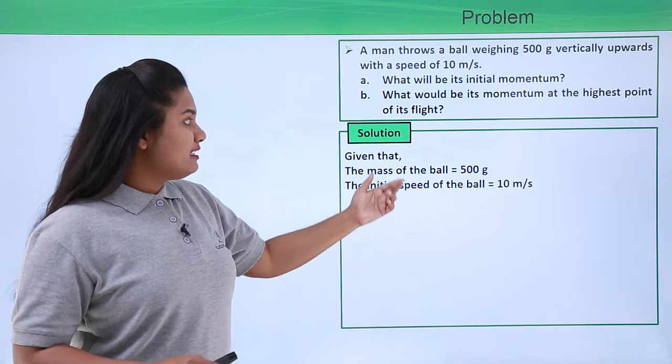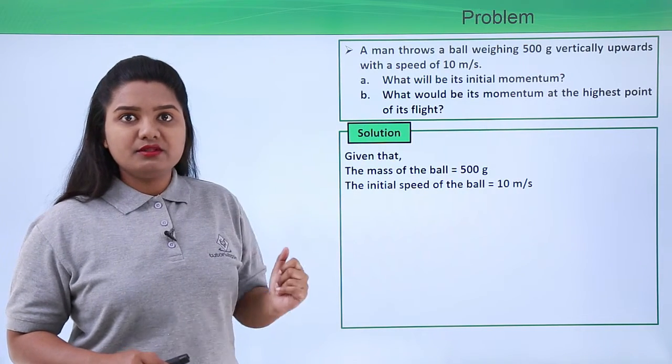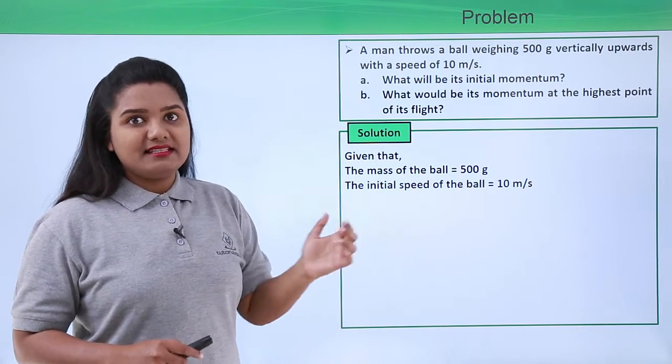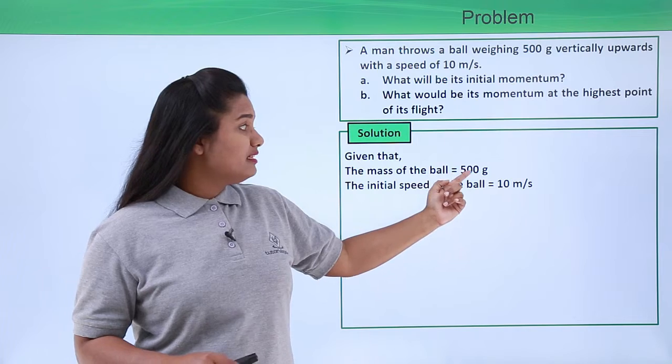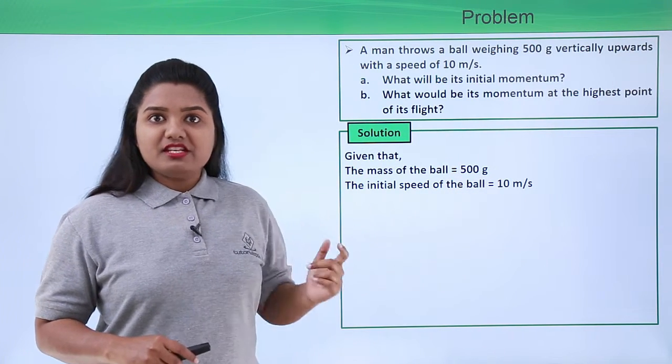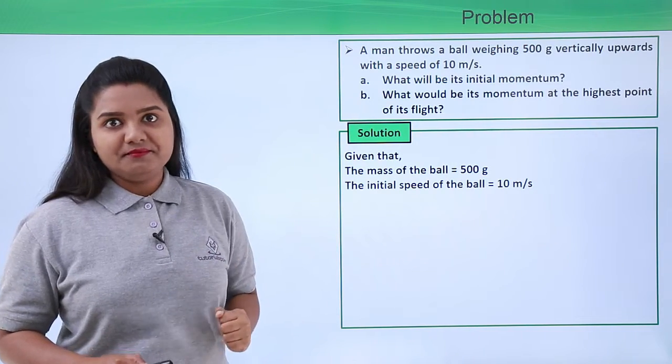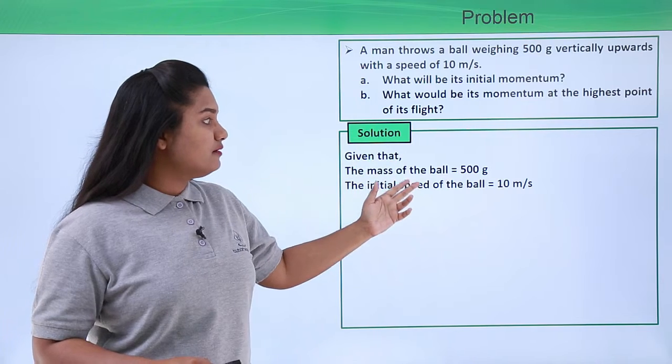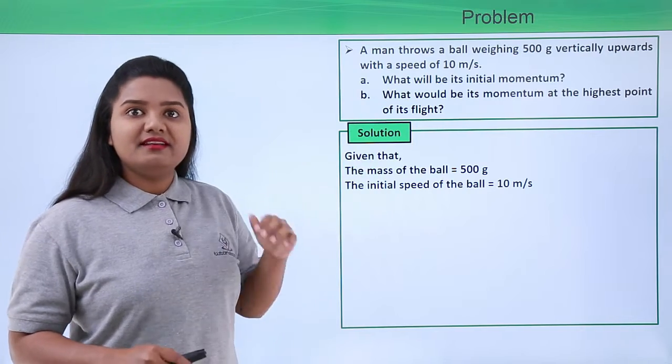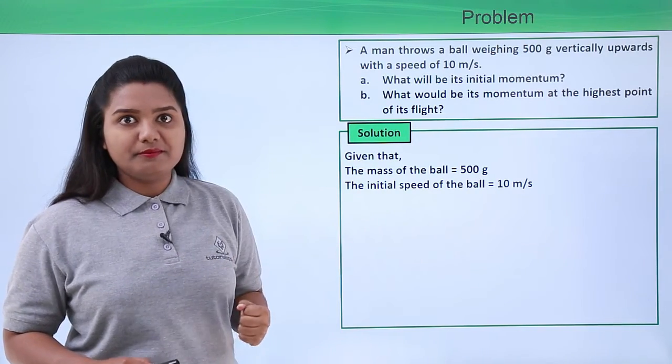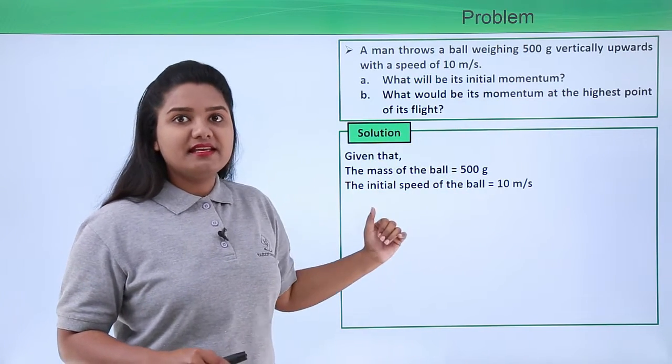Now the next step is that we need to check whether all these quantities that the question has given to us are in SI units or not. So first of all we will check the mass of the object. Now here we see that the mass is given in terms of grams which is not the SI unit of mass, but the SI unit of mass is kilograms or kg. So first of all we need to convert the physical quantities which are not given in SI units to SI units and only then we can proceed to solve the problem.